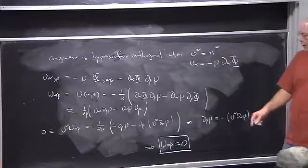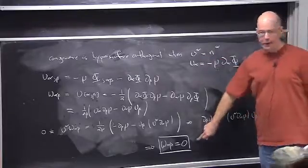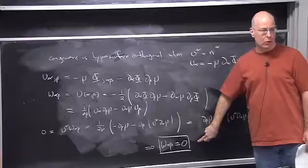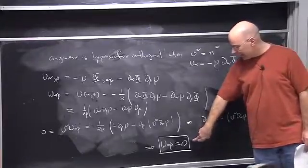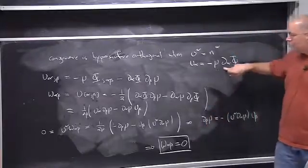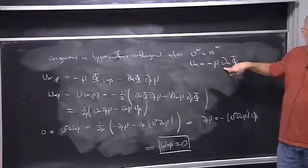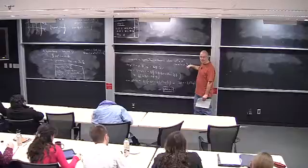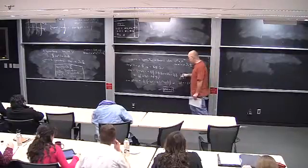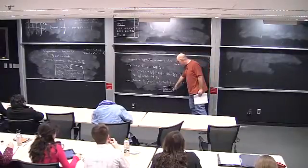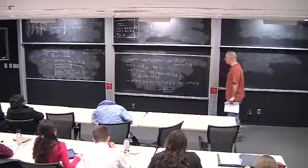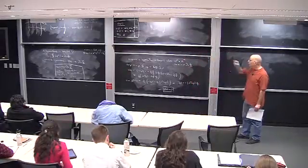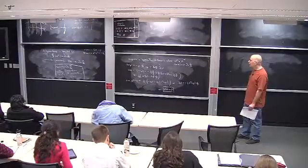So what we have is: if we have hypersurface orthogonality then omega vanishes. With a little more work I could probably show the converse — that if omega vanishes we must have hypersurface orthogonality. I'm not going to try that here, but you can try it — it's a nice challenge and I don't think it's too hard. Then we'd have the 'if and only if' part of the theorem.